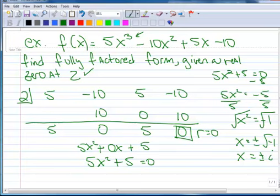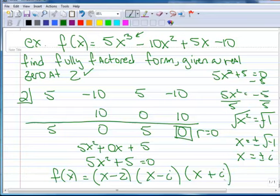So now I'm ready to write my fully factored form. f of x equals x minus 2, because I have a zero at 2, and then it's x minus i, and x minus negative i, which is x plus i, and there's my fully factored form.